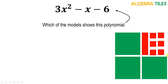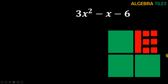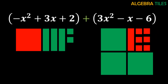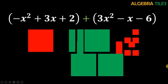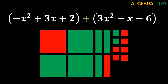Now using the same polynomial we modeled with negative signs, let's add it with another polynomial. We model this second polynomial the same way: the x squared term is negative so we used 1 x squared tile in red, and the remaining terms are positive so they are in green. Again we need to add them by combining both models. I am rearranging and placing all the x squared terms together, all the x terms together, and all the ones terms together.